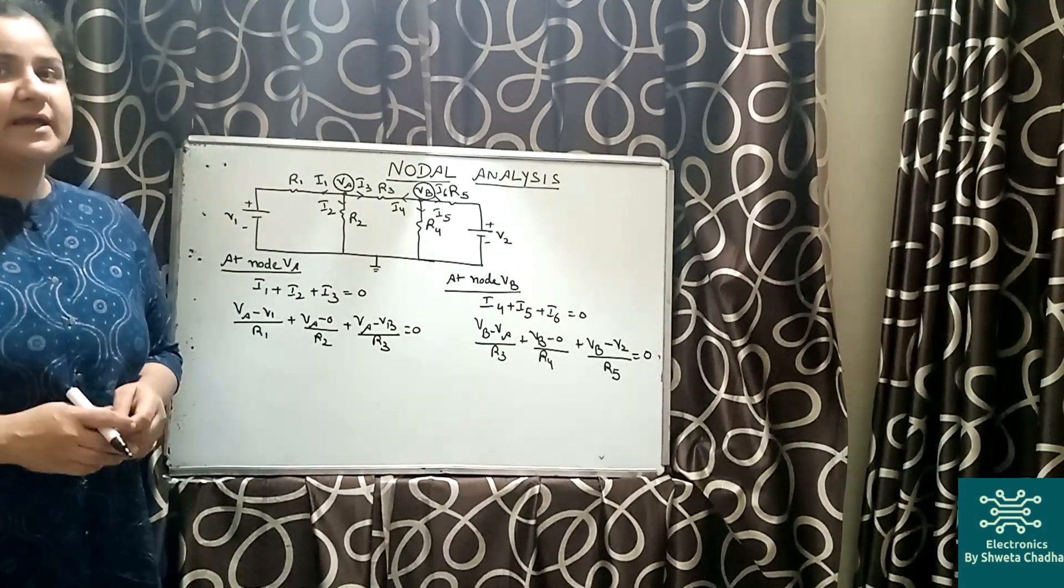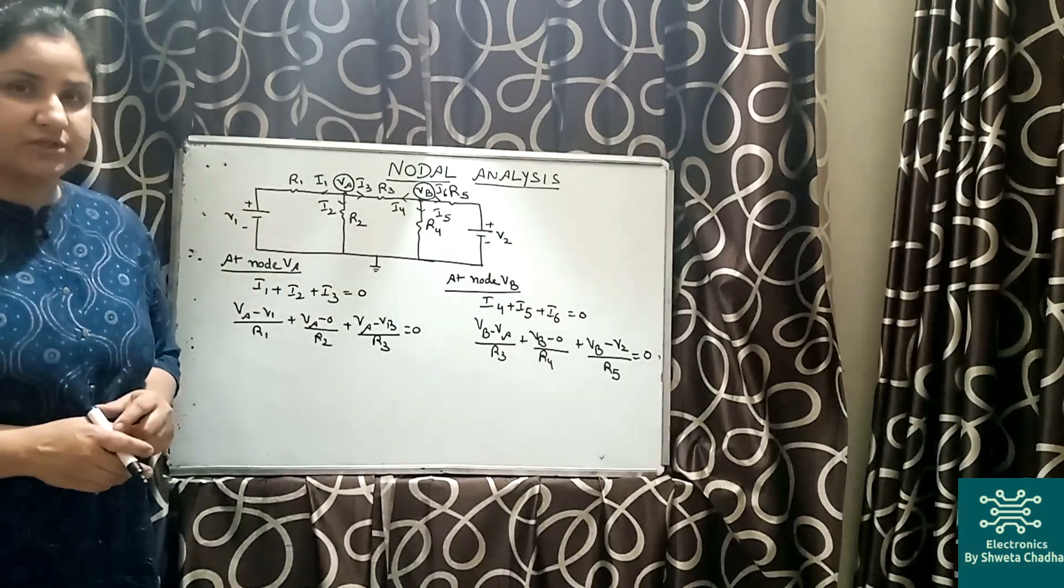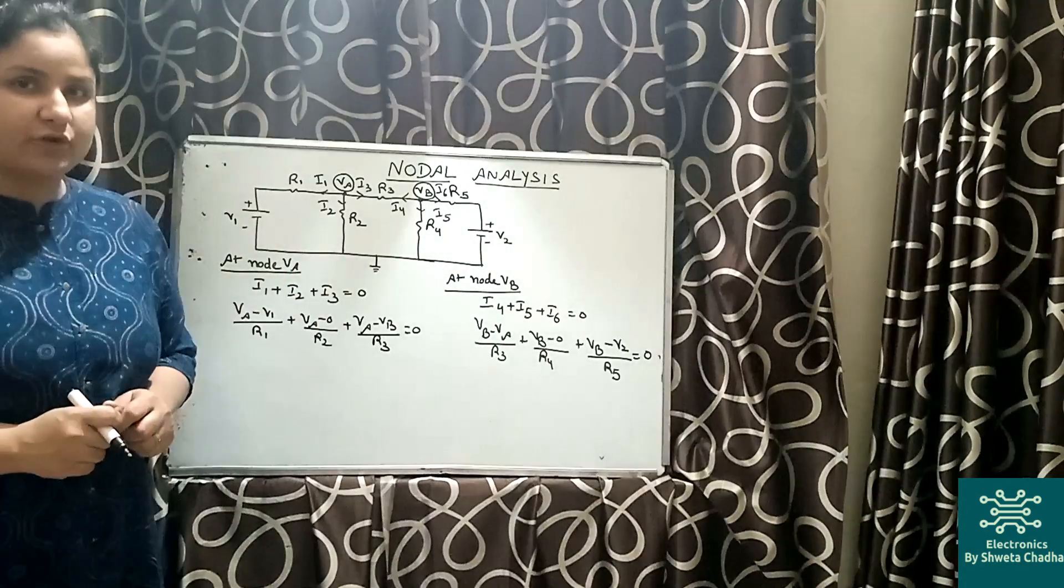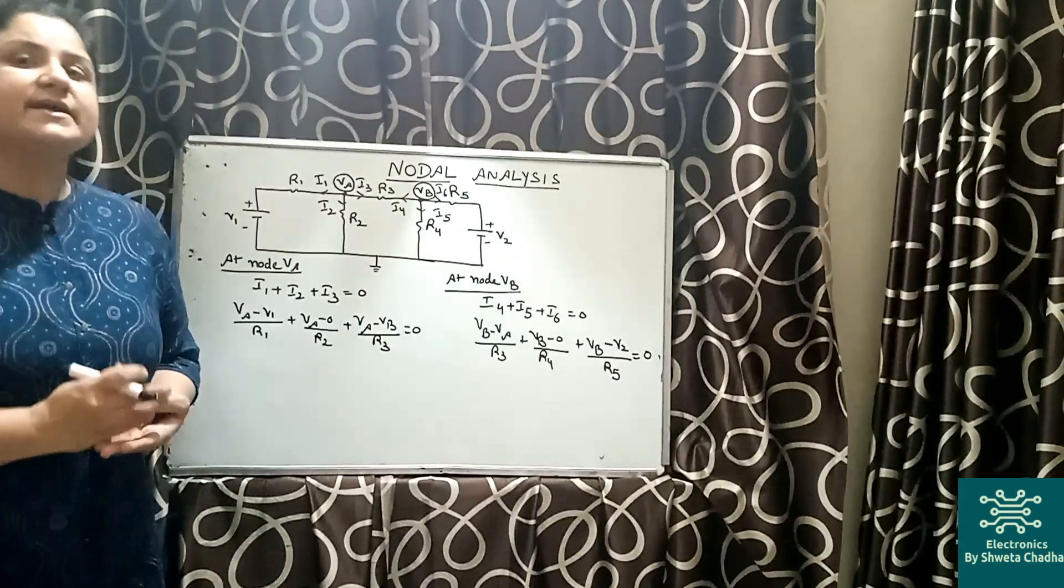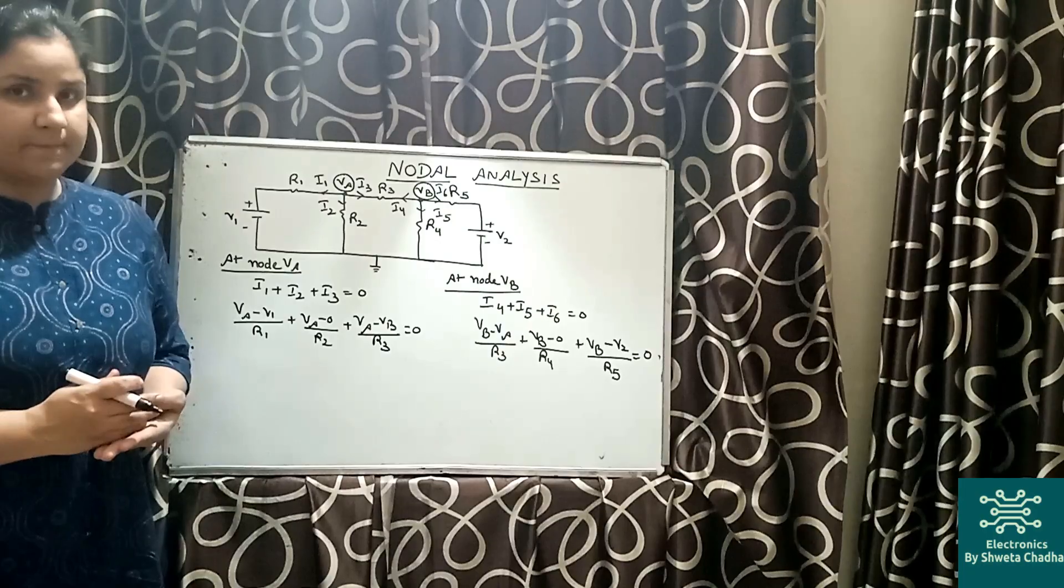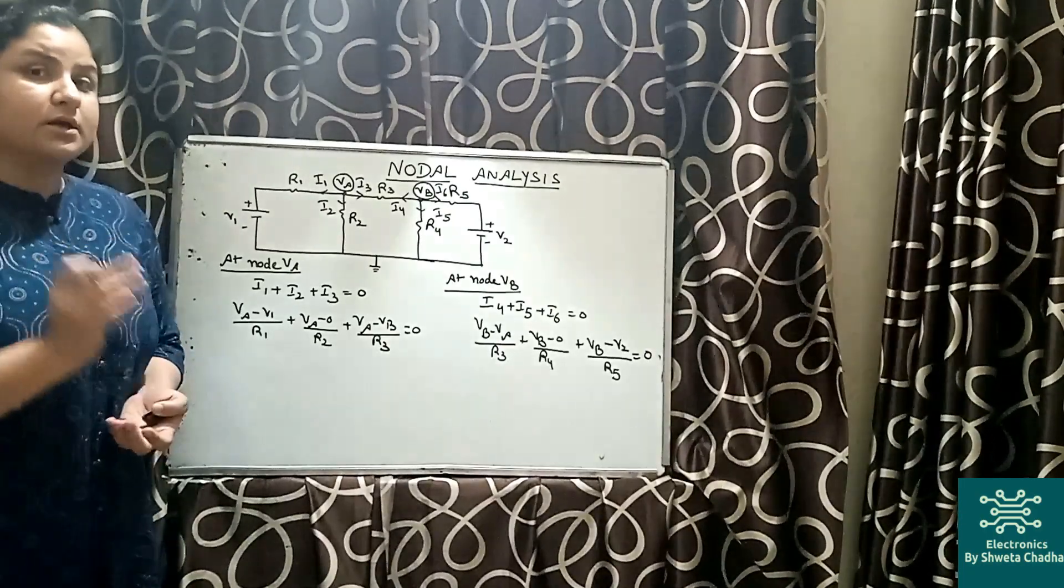The first assumption we're going to take is that the assumed voltage is the highest potential in our circuit. So how is the current actually going to flow? The current is always going to flow from higher potential to lower potential.